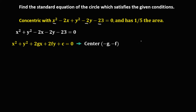First we need to solve for g and f. To solve for g, compare the two equations. We have 2g equal to negative 2. Dividing both sides by 2, g is equal to negative 1.